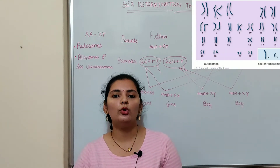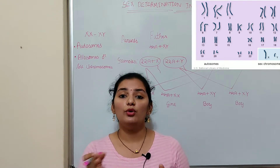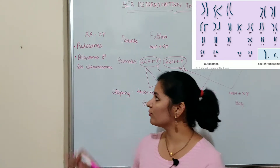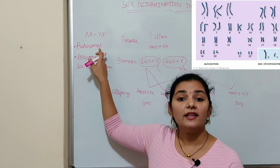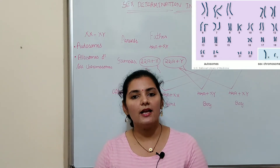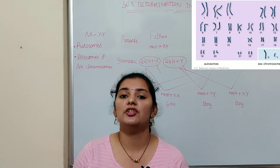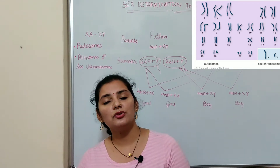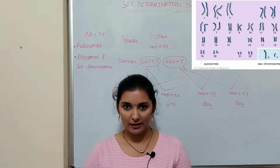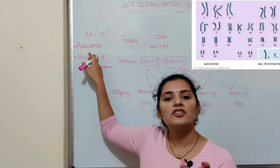As you all know, humans have 23 pairs of chromosomes, or in total 46 chromosomes. Out of these 23 pairs, 22 pairs of chromosomes are called autosomes. These 22 pairs of autosomes are the same for male and female — same means their size, structure, arrangement of genes, number of genes, and their position — everything is the same in male and female.